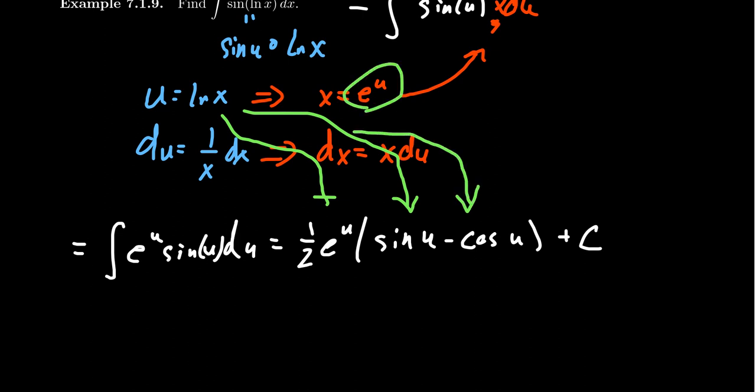Now, of course, e to the u is equal to x right there. So making that simplification, you're going to end up with x over 2 times sine of the natural log of x minus cosine times the natural log of x plus an arbitrary constant. And this now gives us the antiderivative that we were seeking.